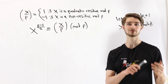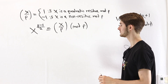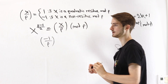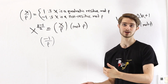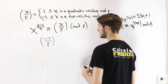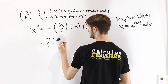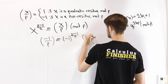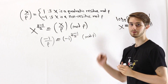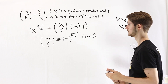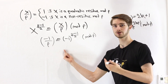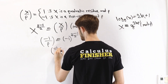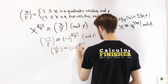Let's look at an example of applying Euler's criterion: is -1 a quadratic residue mod p? We can also write -1 as p-1. By Euler's criterion, the Legendre symbol (-1/p) is congruent to (-1)^((p-1)/2) mod p. Since (-1) raised to any power is always 1 or -1, this congruence is actually an equality: (-1/p) = (-1)^((p-1)/2).